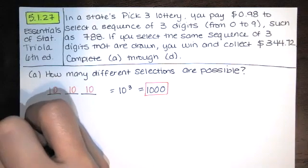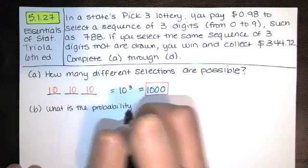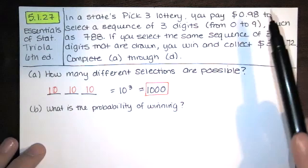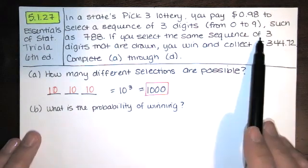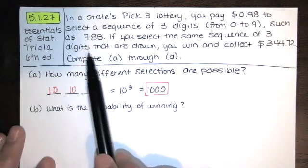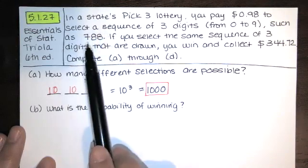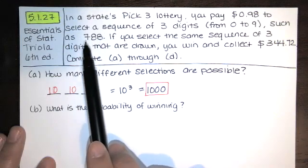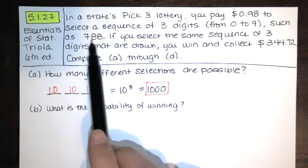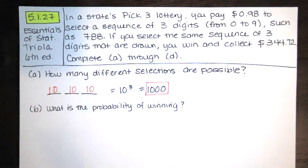Then part B says, what is the probability of winning? Well, this is a little bit ambiguous, but let's look at that problem statement further. It says, if you select the same sequence of three digits that are drawn, you win and collect this much. So if the answer was 7, 8, 8, if that was the winning sequence, 7, 8, 8 would be considered different from 8, 7, 8. We're talking about a particular sequence. We can't just change the order on these like we do when we're talking about combinations. So there's really only one possibility out of those 1,000 different selections that would result in winning.